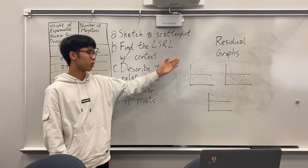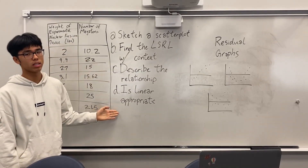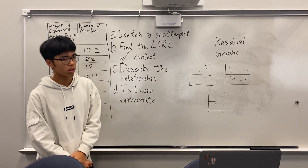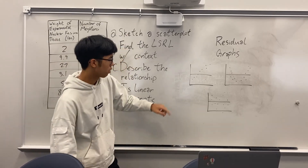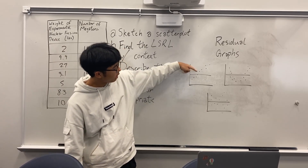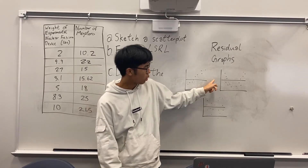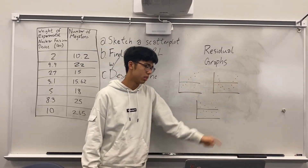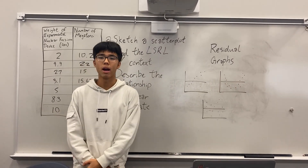These are residual graphs. We use them to see if linear is appropriate. Each residual graph either has a pattern or has no pattern. For example, this first one has a linear pattern, the second one has a parabola, but this last one has no pattern.